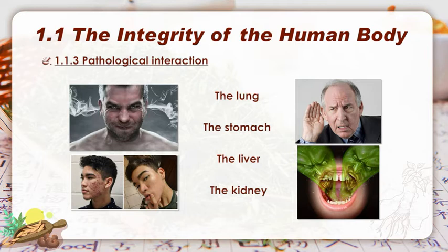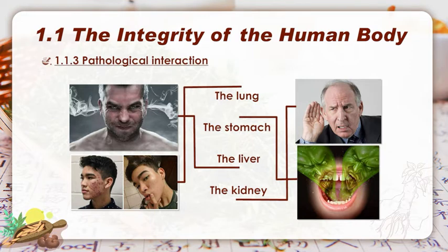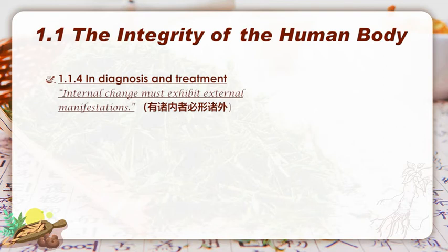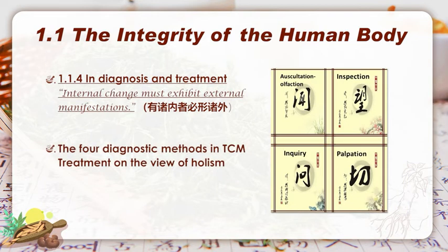Anger is the emotion of the liver. The lung connects the skin. The kidney opens into the ears, and the stomach channel distributes to the area of the mouth. Therefore, we can make links in this way. As a very famous TCM doctor said, internal change must exhibit external manifestations — yu nei zhe bi xing zhu wai. That's why, by means of pulse taking, tongue inspecting, inquiry, as well as listening and smelling — the four diagnostic methods in TCM: wang, wen, wen, qie — a TCM doctor makes diagnosis.